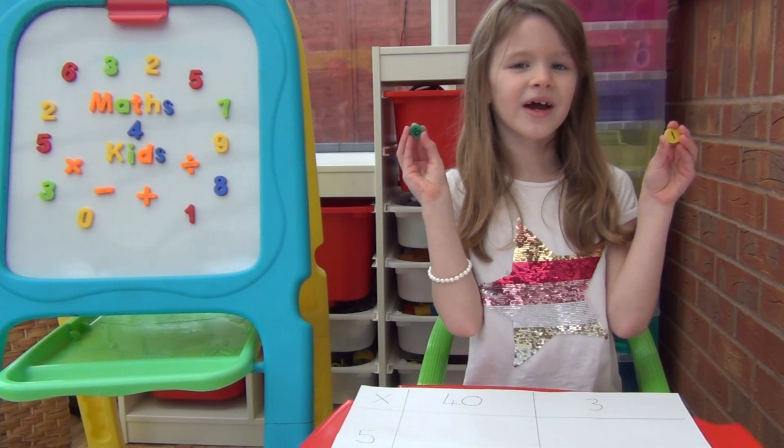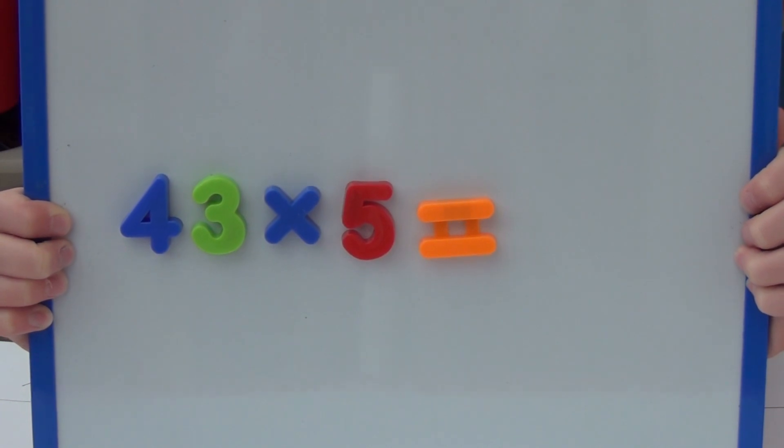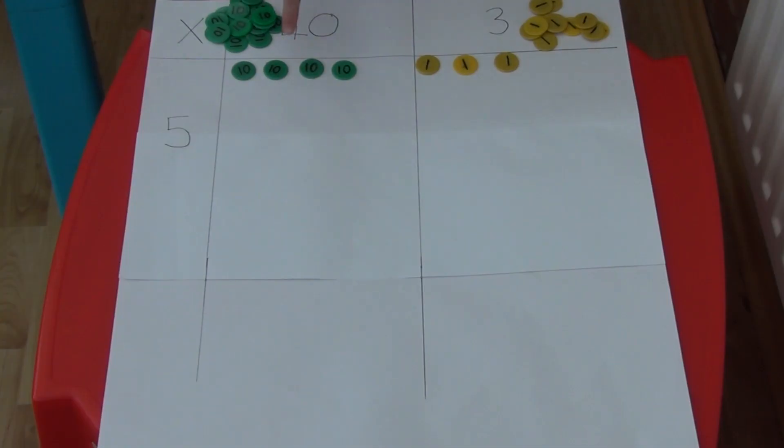This time let's use place value counters instead of straws. This time I'll try 43 times 5. I'm going to lay out the 43 five times using 10s counters and 1s counters.